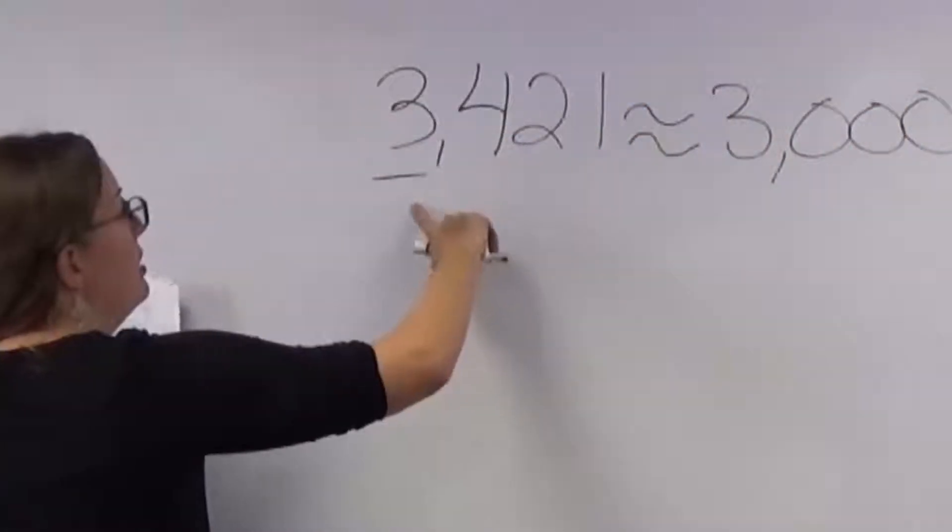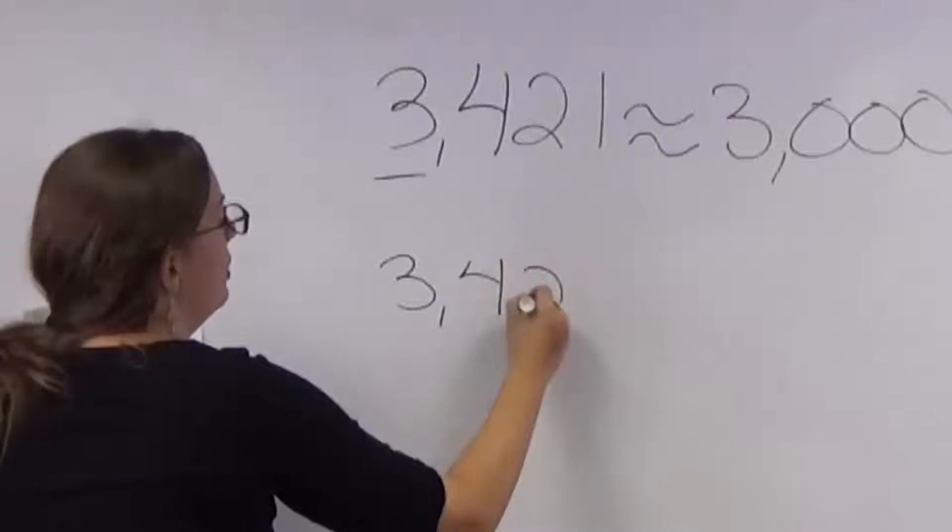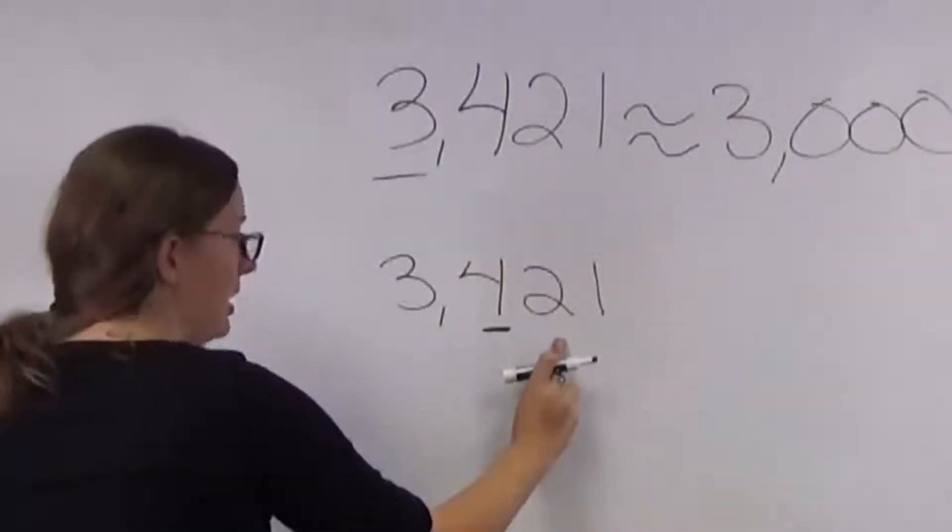If we were rounding this to the nearest hundreds place, we would underline that number right there in the hundreds place, look to the immediate right,